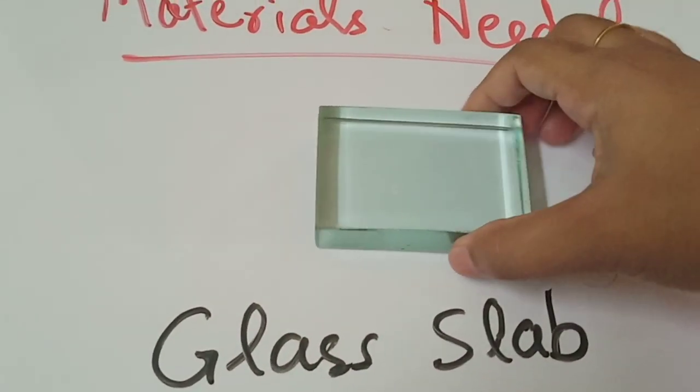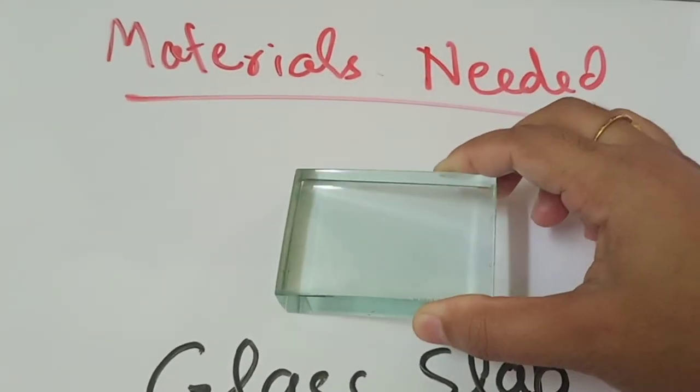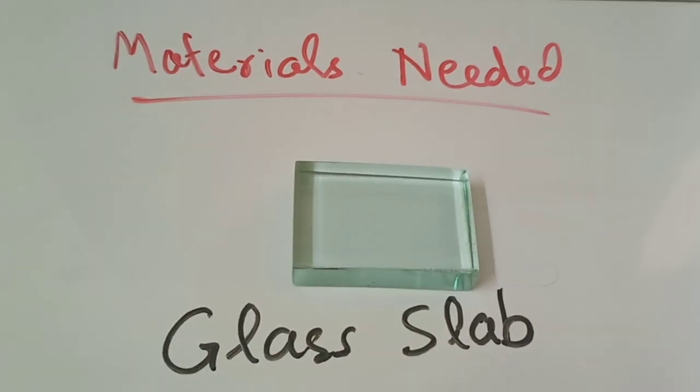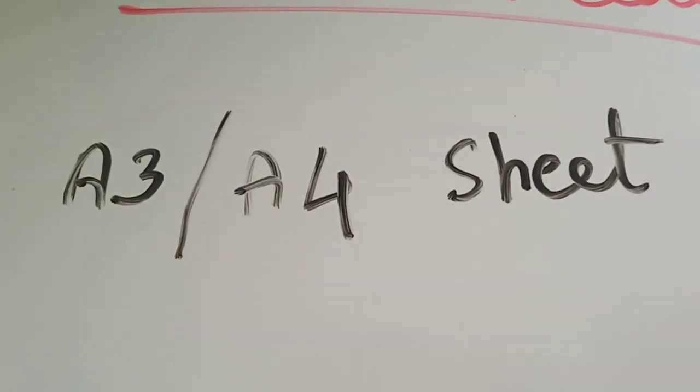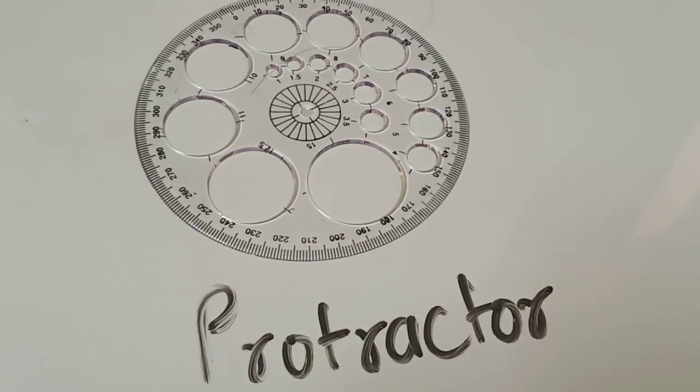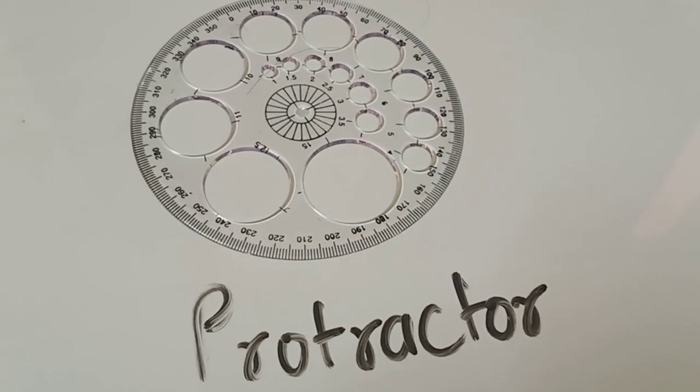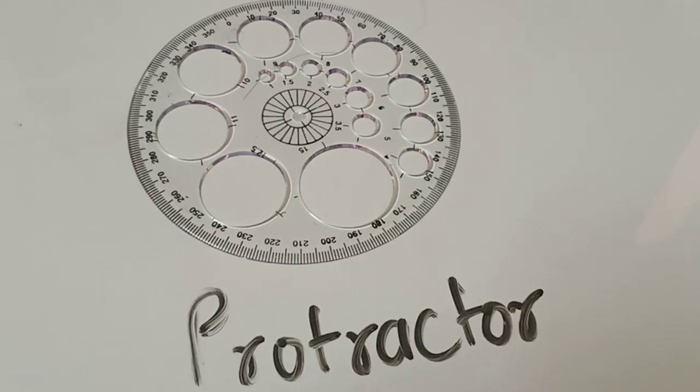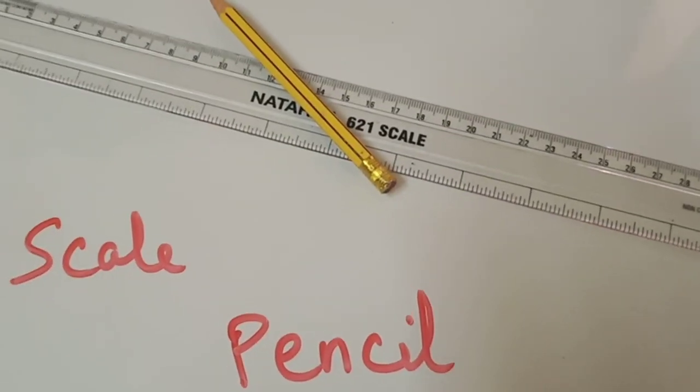I will share the link to find a glass slab on Amazon. It's very cheap. You get a full kit with lenses and mirrors. Then we need an A3 or A4 sheet and a protractor. Here I have taken a 360-degree protractor, but you just need a normal 180-degree protractor that comes in your geometry box.